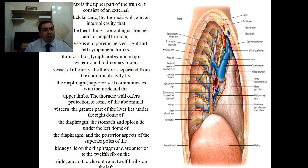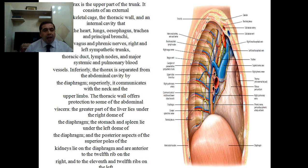The internal cavity of the thorax contains the heart, lungs, esophagus, trachea, and principal bronchi. Also the thymus, vagus and phrenic nerves, right and left sympathetic trunks, thoracic duct, lymph nodes, and the major systemic and pulmonary blood vessels.